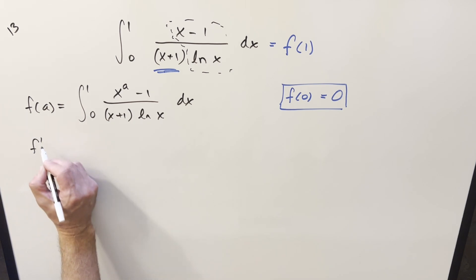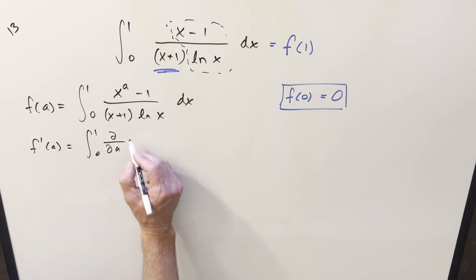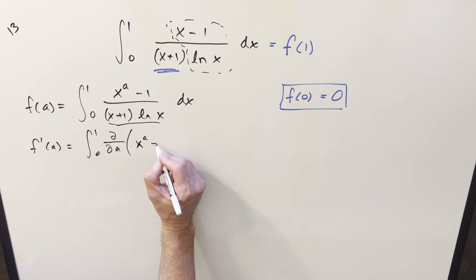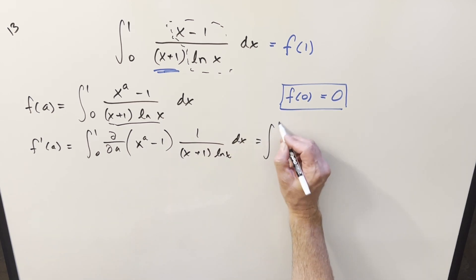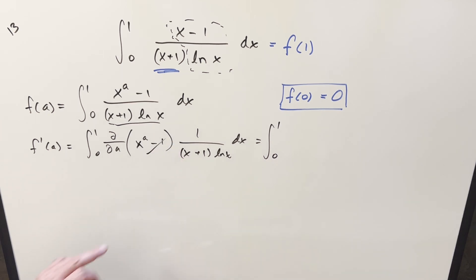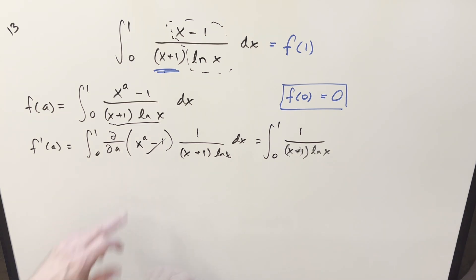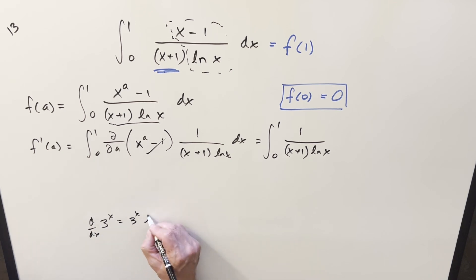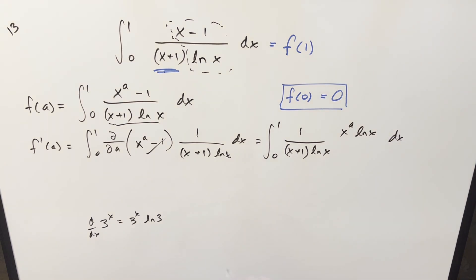Let's go ahead and differentiate with respect to a. Using Feynman's trick, we differentiate inside the integral sign as a partial with respect to a. All the stuff in the denominator is just a constant with respect to a, so we split it up — we worry about differentiating x to the a minus 1, and treat everything else as a constant. When you differentiate 1, that's just 0. Then, keeping in mind that x is a constant here — just like differentiating 3 to the x gives 3 to the x times ln(3) — we get x to the a times ln(x). Then we can cancel out the ln(x)'s, giving us a clean expression.